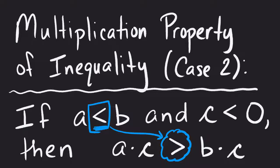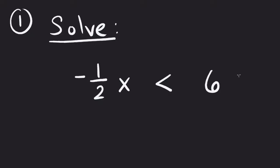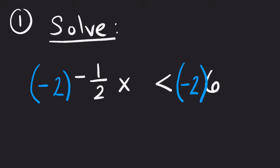Let's look at a numeric example. Solve: negative one-half x is less than six. I need to figure out what to multiply by to get x by itself. I need not just the two — because the two will reduce out the fraction — but also a negative, because that will reduce out the negative value. So I multiply both sides by negative two.